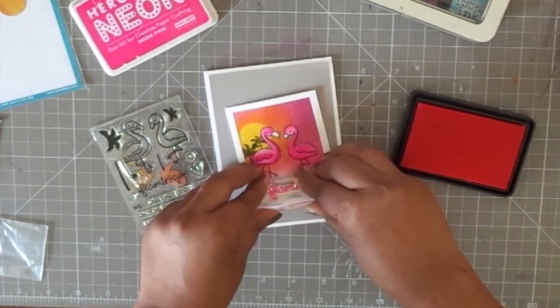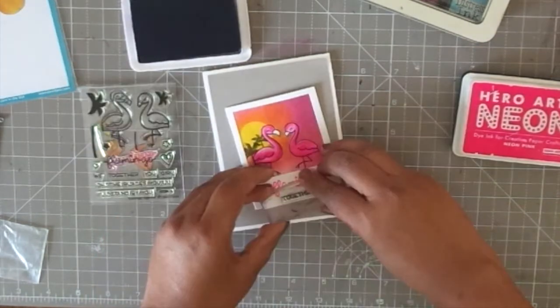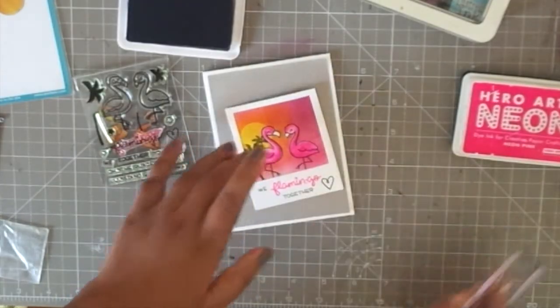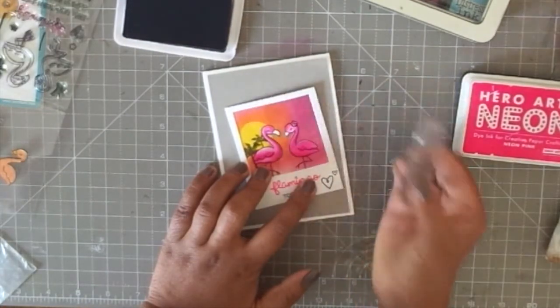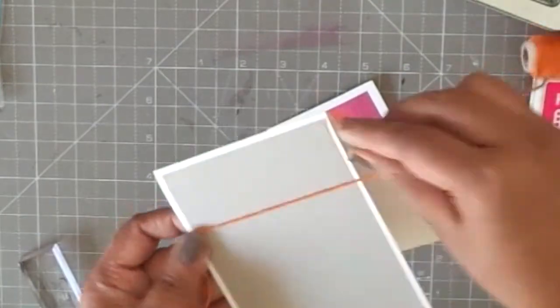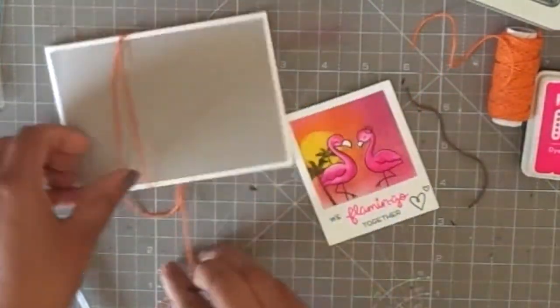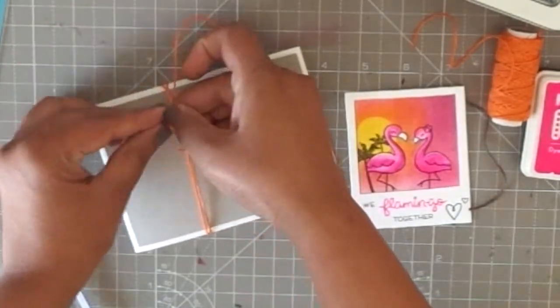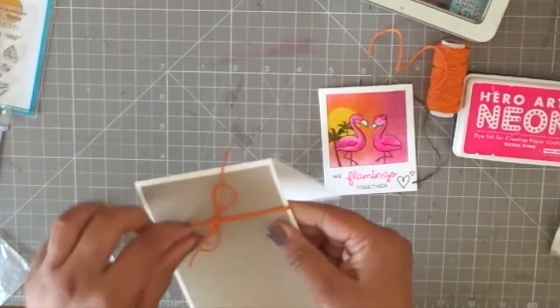Now I'm building the sentiment. I'm using this Hero Arts neon ink, it's really hot pink and I just stamped 'we flamingo together,' I think it's really cute. Then I added some hearts as well and a flower to the little lady flamingo there. Now I'm adding some twine just to accent it a little bit more. The bows just kind of help the design to pop up a little bit more.